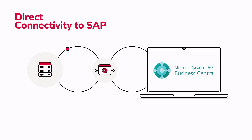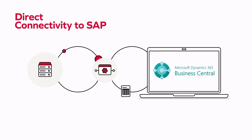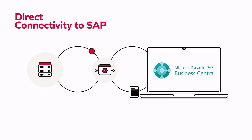But what if these two systems could be linked and automatically synchronized? When an activity occurs in the CRM system, the data is automatically transferred to SAP.